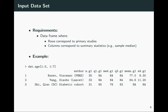The main functions in the metamedian package require users to supply a dataset where rows correspond to primary studies and columns correspond to summary statistics. In the example dataset, the first three rows and first seven columns contain — optionally — the author name, sample size, median, and other summary statistics for the first group (non-survivors). Additional columns cover the second group (survivors), denoted by G2.